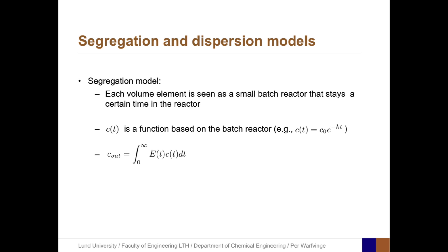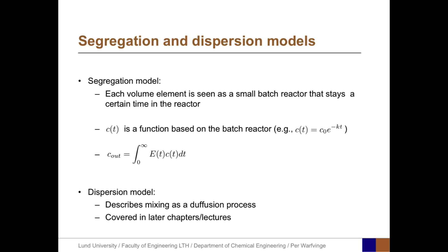We have two more models to describe non-ideal reactors. One is the segregation model, and the other is the dispersion model. The segregation model is based on each volume element being seen as a small batch reactor that stays a certain time in the reactor, and we weigh together the various elements with E(t). In the dispersion model, mixing is described as a diffusion process, but this is covered in later chapters.